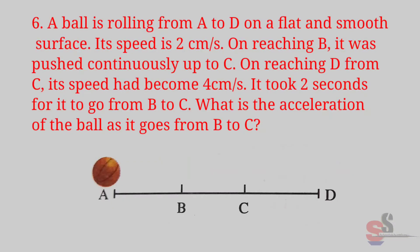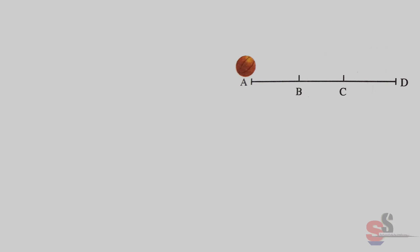Question sixth: A ball is rolling from A to D on a flat and smooth surface. Its speed is 2 cm per second. On reaching B, it was pushed continuously up to C. On reaching D from C, its speed has become 4 cm per second. It took 2 seconds for it to go from B to C. What is the acceleration of the ball as it goes from B to C? Answer: See carefully, the ball moves as follows.